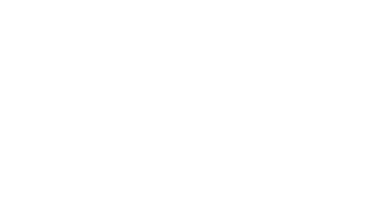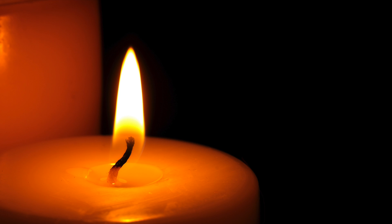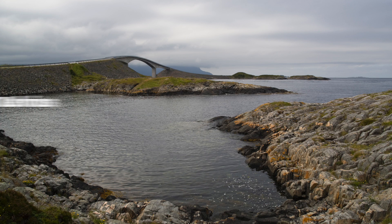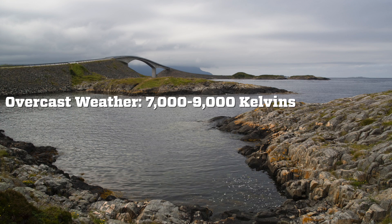White Balance determines how warm or cool an image feels, as it's measured by color temperature. Color temperature is measured in the unit of Kelvins, which gives a numerical value to a color cast by a source of light. Basically, the lower the number of Kelvins, the warmer the light source is. The higher the number, the cooler the light source is.